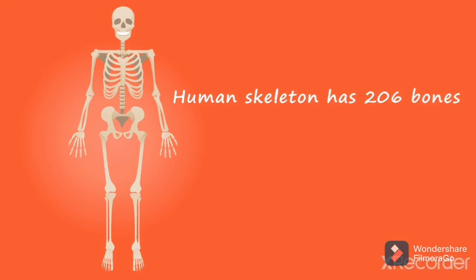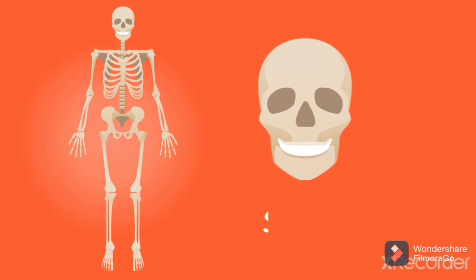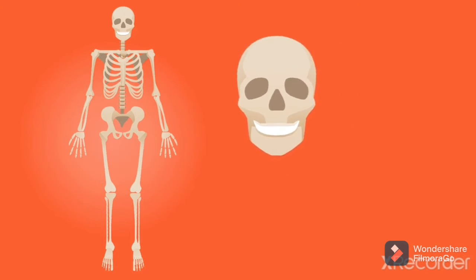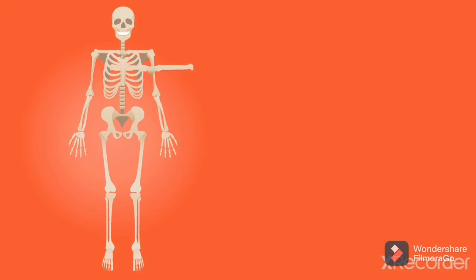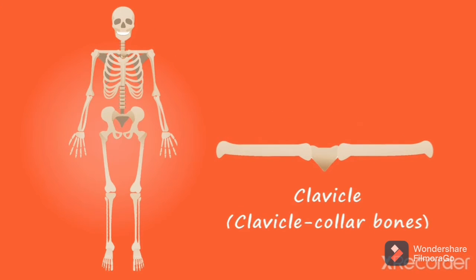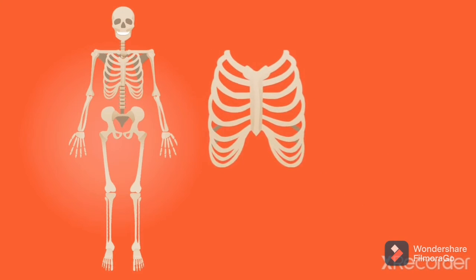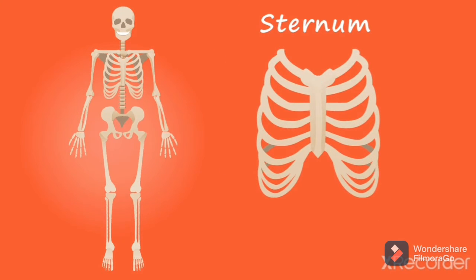Here is our skeleton system. The human skeleton system has a total of 206 bones. This is the skull, which has the cranium that protects our brain. This is the clavicle, also called the collar bone. This is the rib cage that includes 12 pairs of ribs.